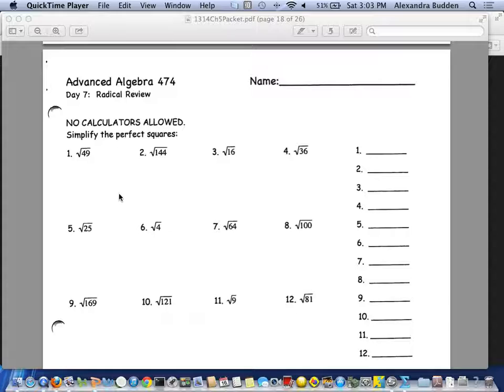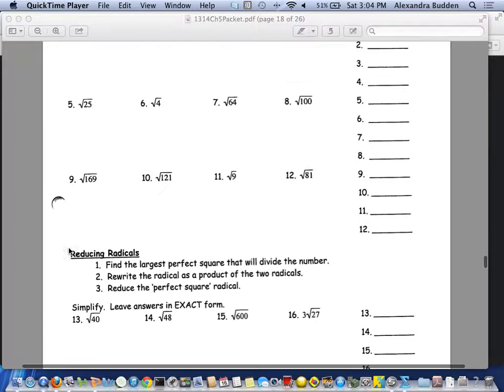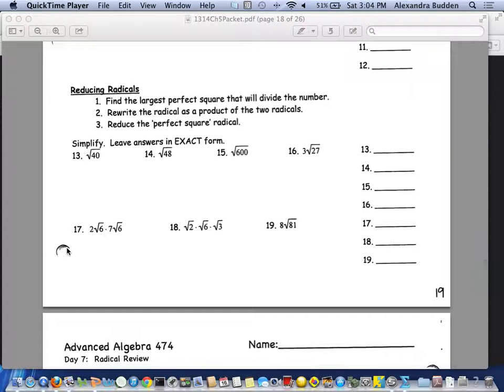Hi all, this is a quick video that goes along with day 7 radical review. I'm just going to do a few of the examples on pages 19 and 20 together with you, and then the rest of the worksheet is your homework. We're going to skip 1 through 12 because those are perfect squares and go right to 13 through 19.